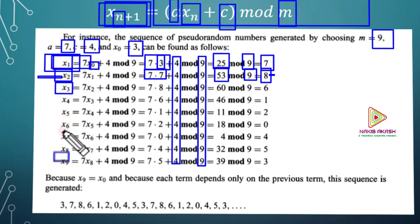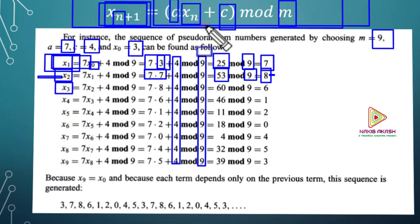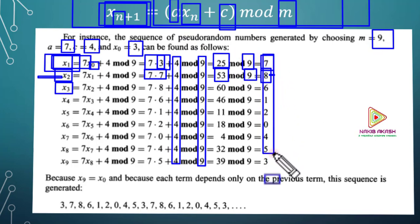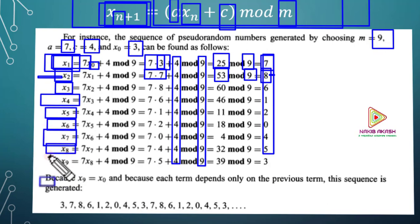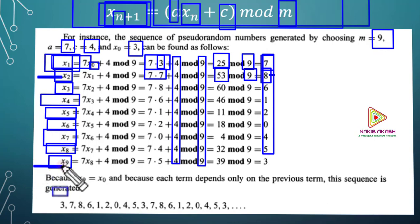We continue to generate the numbers: x1, x2, x3, x4, x5, x6, x7, x8, x9, and x0, applying the same formula repeatedly.